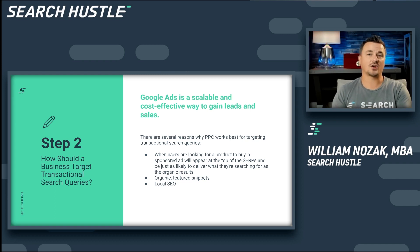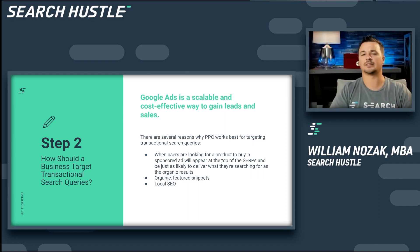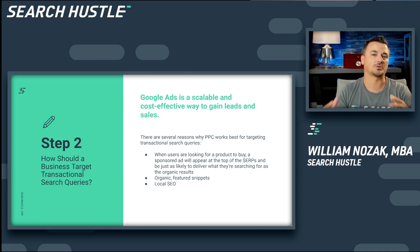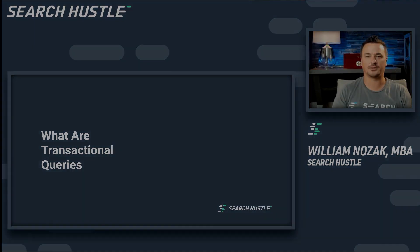And then local SEO — if you've got a service that services an area or a brick and mortar, it certainly makes sense to have a GMB and directories built out with social media presence. So really, these are three great ways to target transactional search queries. That's a transactional search query — if you need to go back and watch that, go ahead. If not, I'll see you in the next module.